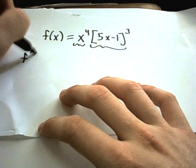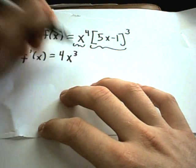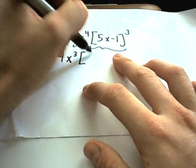So the derivative of this, if I take the derivative of x to the fourth, I'll get 4x to the third. You leave the other piece alone.